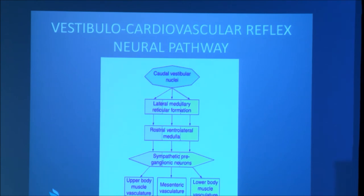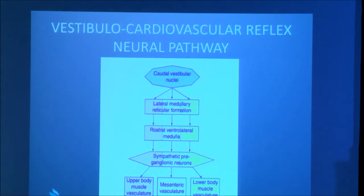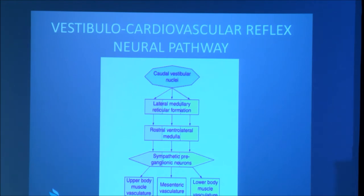The neural pathway for the vestibulocardiovascular reflex — as recognized in animals — involves the caudal vestibular nuclei, which pass through the lateral medullary reticular formation, then the rostral ventrolateral medulla, and then sympathetic preganglionic neurons supplying smooth muscles of vessels in the upper and lower body and the mesenteric vasculature. Importantly, there is differential activation — vasoconstriction is greater in the lower limbs where pooling mainly occurs.